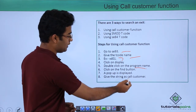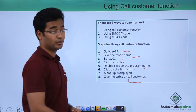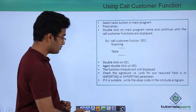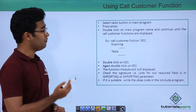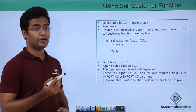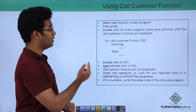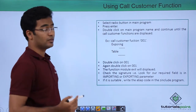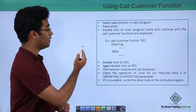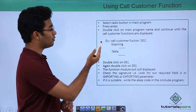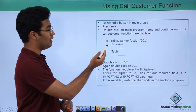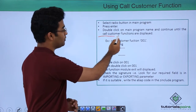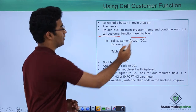We have to give the search string as 'Call Customer' itself. Then we have to select the radio button for the main program and press Enter. Then double-click on the main program name and continue until the Call Customer Functions are displayed.